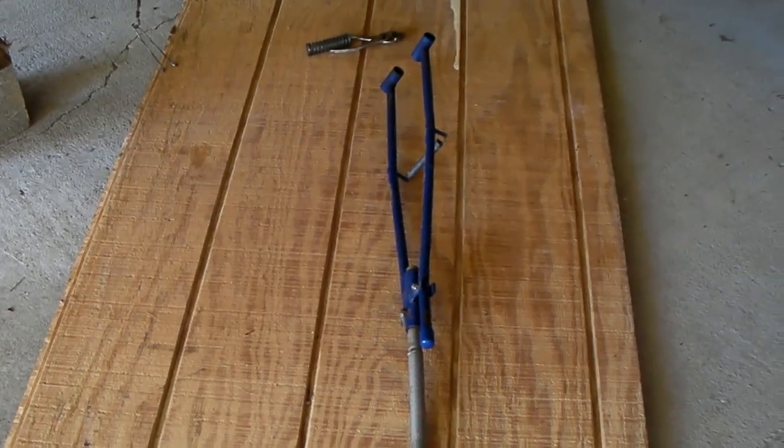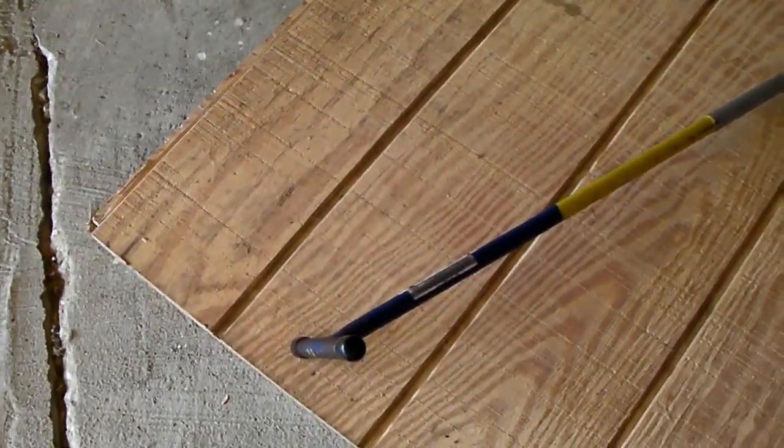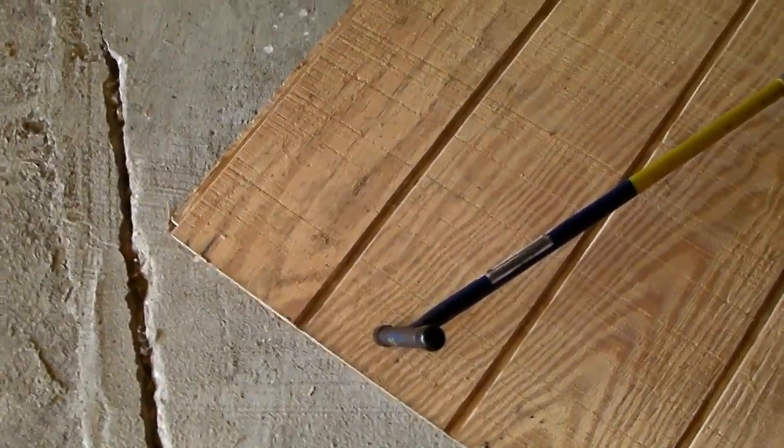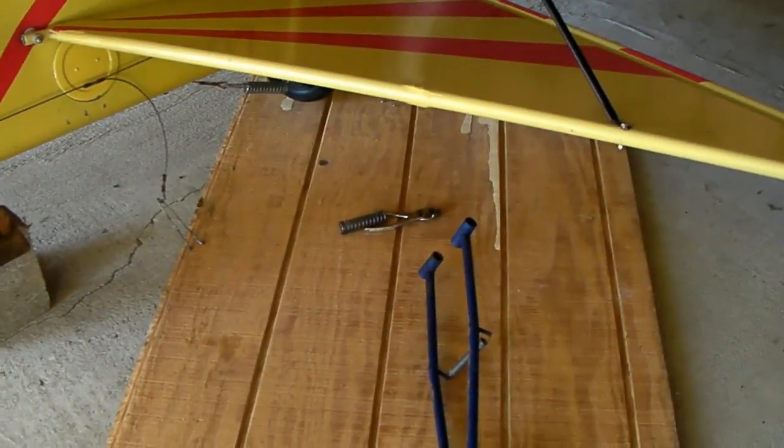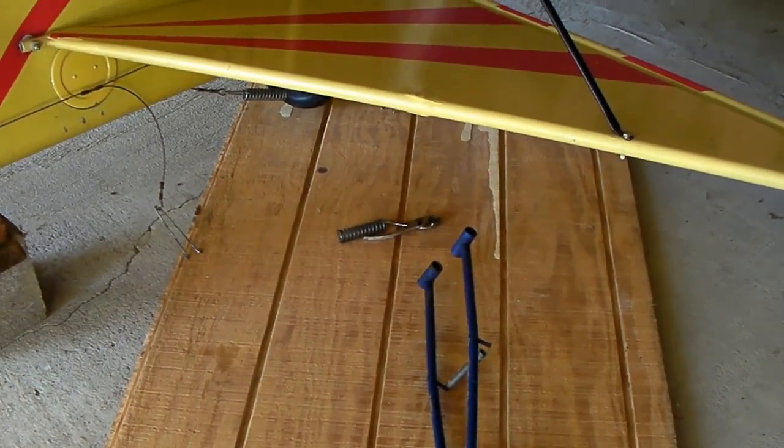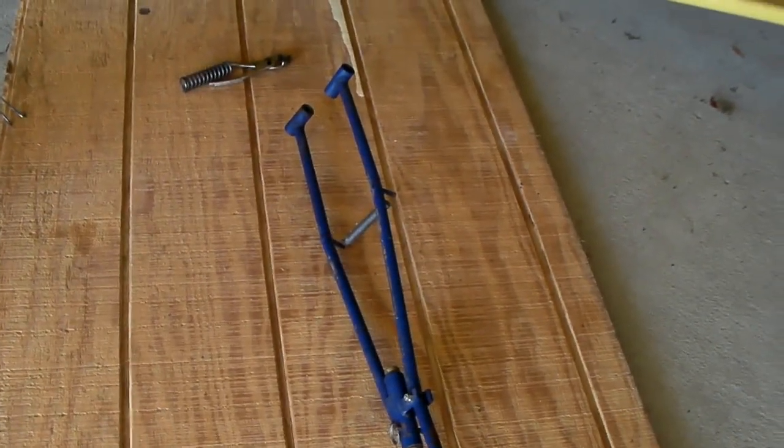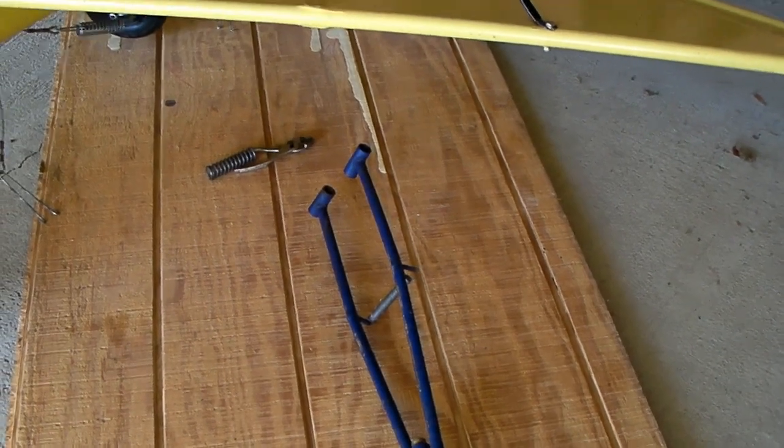One thing I should show you is this little handle here comes with the airplane. This is how you move the thing backwards and pull it into the hanger. It's quite easy to do with this. You can pull the plane backwards easily by pulling it by the tailwheel. The end of it there clamps on the tailwheel axle, and there's a spring on it that holds those two things together. So it's pretty easy to put on and take off.